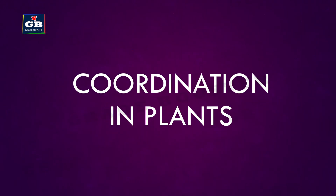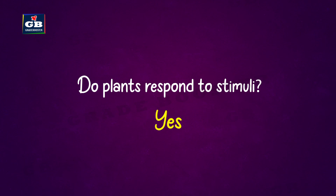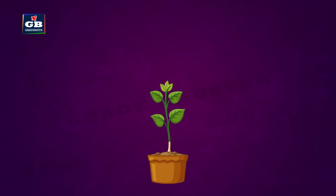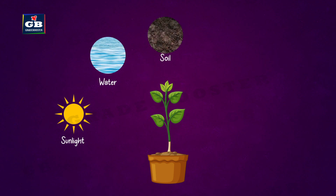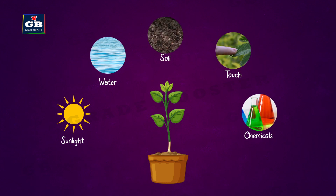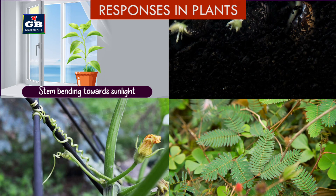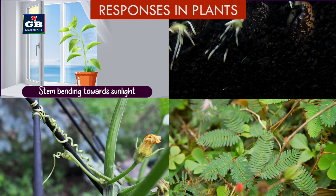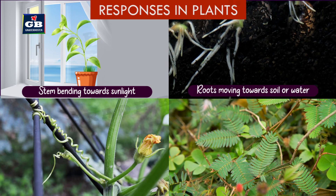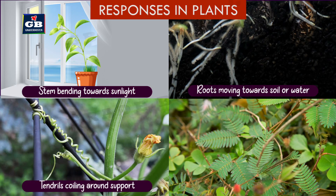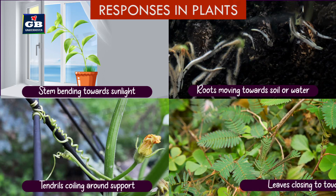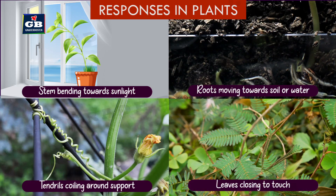Coordination in plants: do plants respond to stimuli? Yes, plants respond to stimuli like sunlight, water, soil, touch, chemicals, etc. Most of these responses are in the form of movements — for example, stems bending towards sunlight, roots growing towards soil or water, tendrils of plants coiling around a support, and closing of leaves of the touch-me-not plant when touched.